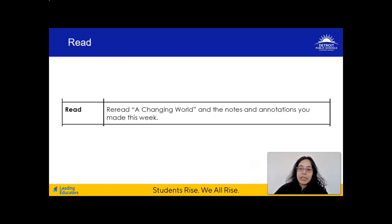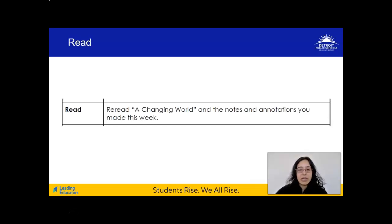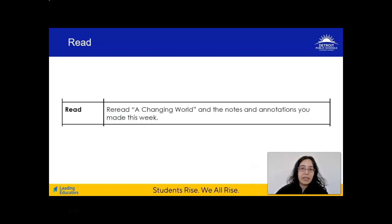We've spent the last few lessons completing a first reading and close reading of A Changing World. Each time you read the text, you made annotations in the margins, underlined key sections, and answered questions after reading. Today, go back and read the complete text — pages 17 through 20 in your packet. As you read, pay attention to the notes and annotations you made, and skim over the answers you wrote to the questions from lessons 5, 6, 7, and 8. Go ahead and pause the video now to re-read A Changing World.